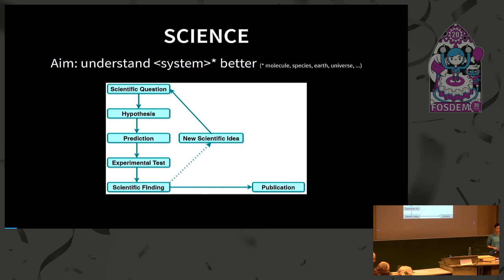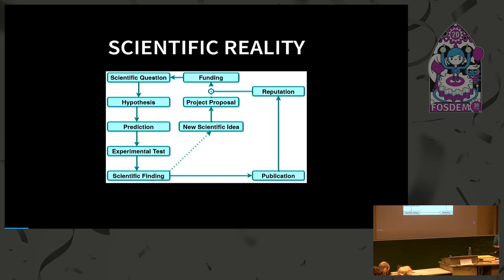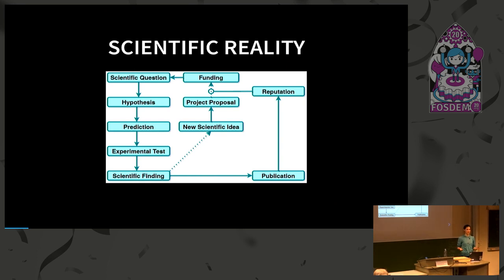Usually we're not done there — a new scientific idea pops up and the whole cycle starts from the beginning. This is not the whole truth, because science also needs to think about money. To actually be able to answer your scientific question, you need funding for your team. This can come from writing a project proposal which gets evaluated, and if the proposal is good, you get the funding. A big aspect in this is the reputation of the respective scientists, and for this, publications are the currency in science.